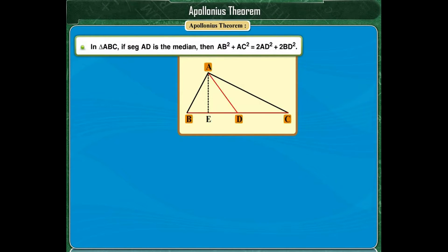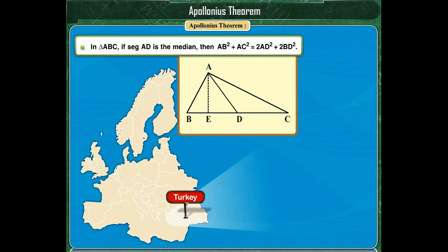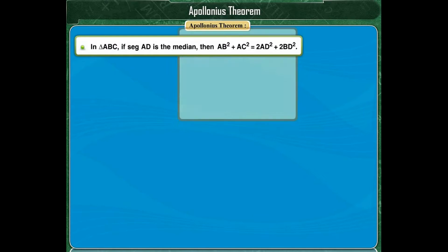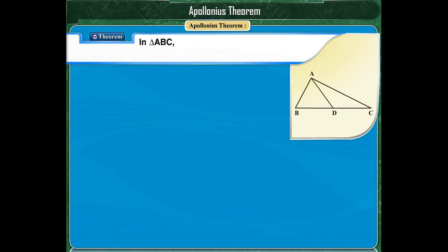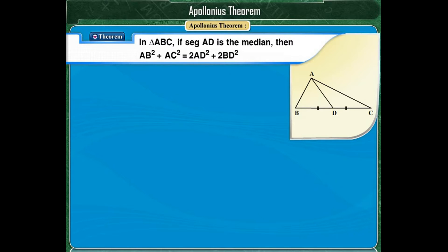This is a theorem that relates the length of a median of a triangle to the lengths of its sides. The theorem is named after the mathematician Apollonius of Perga. It states that in triangle ABC, if segment AD is the median, then AB squared plus AC squared is equal to 2AD squared plus 2BD squared.